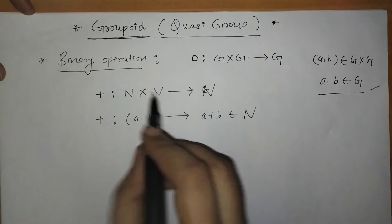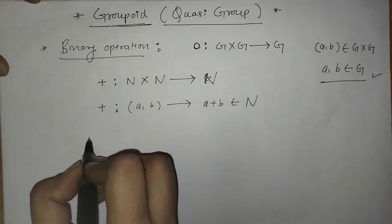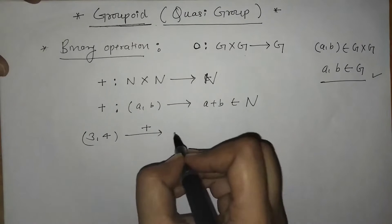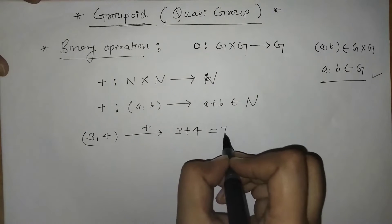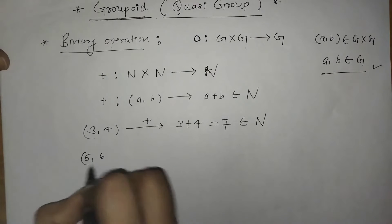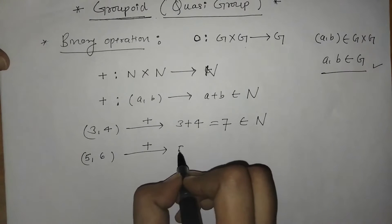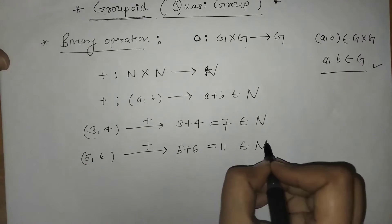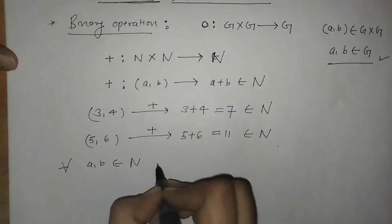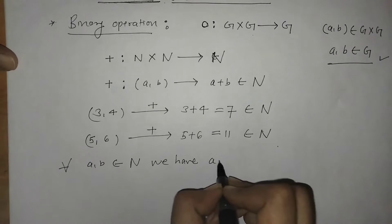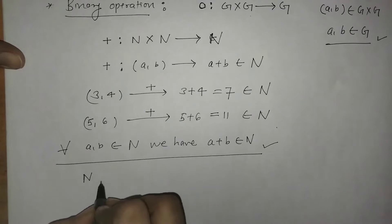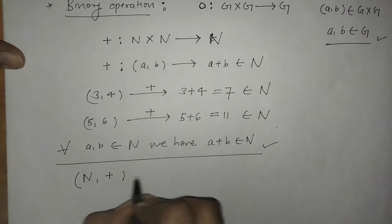When we operate addition on two natural numbers, we get another natural number. For example, if we take 3 and 4 and operate addition, we get 3 plus 4 equals 7, which belongs to the set of natural numbers. Similarly, 5 plus 6 is again a natural number. That means for all a, b belonging to N, we have a plus b belonging to N. So we say that the set N with the operation addition is a groupoid.